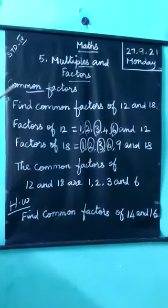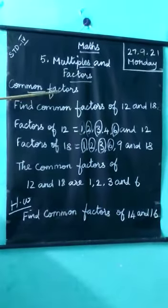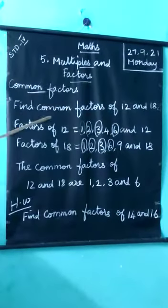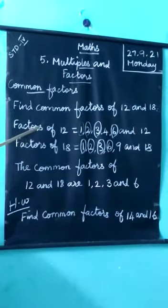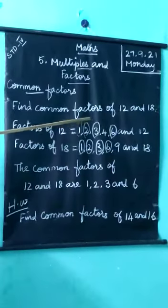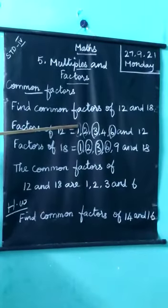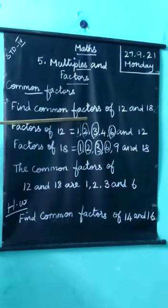We already saw factors. What is the meaning of factors? Factors means factors of 12. If 12 is the number, what is the number? Exact. That is the remainder. It is the exact divide. That is the number factors.